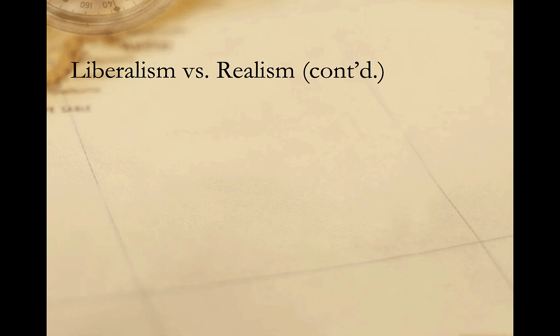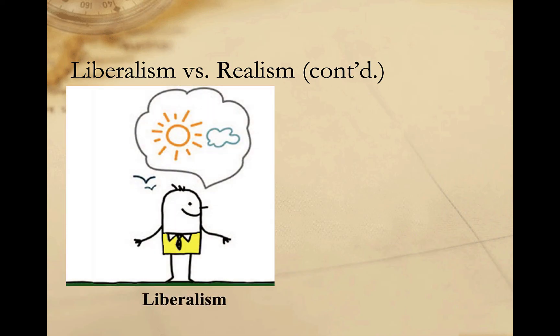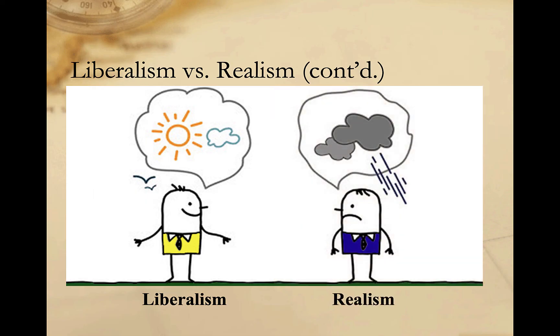Not surprisingly then, liberals tend to have a fairly optimistic outlook on the international system. They believe it's possible to construct international institutions and rules that will help prevent conflict and promote cooperation between states. Realists, on the other hand, tend to have a more pessimistic outlook on international politics. They argue that the best we can hope for is stability, as states act to expand their own power and protect their national interests.